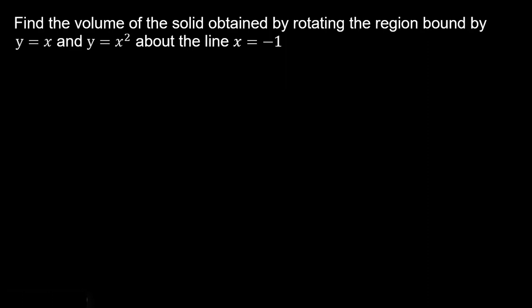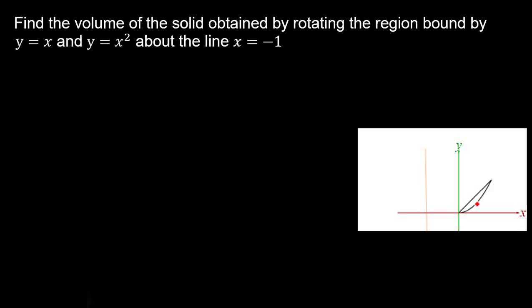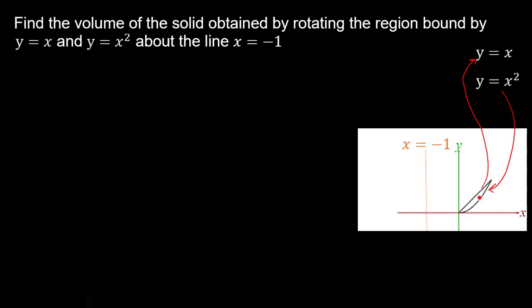First thing we want to do is plot this out. We're trying to take this area in between these two curves and rotate it around the line x equals negative 1. This line here is y equals x, the bottom line is y equals x squared, and this orange line is x equals negative 1. We're going to rotate this area between these two curves around — and to get a visual of what that looks like we can go ahead and animate this.